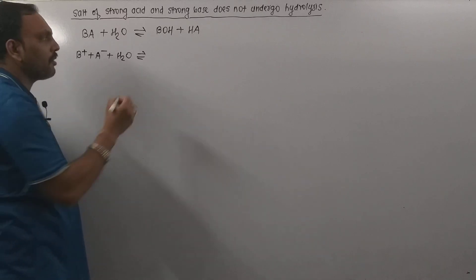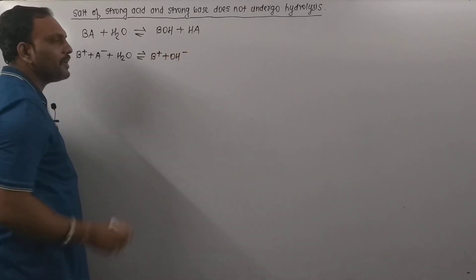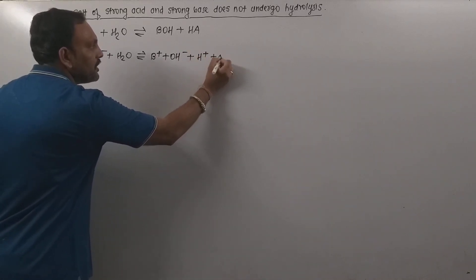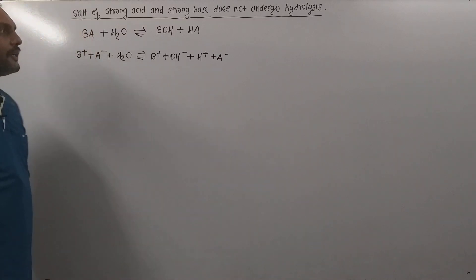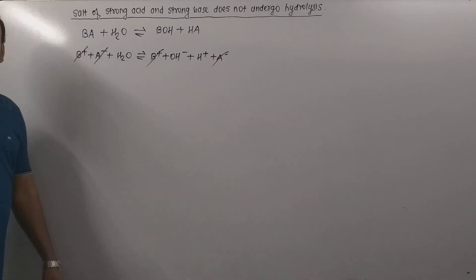BOH is a strong base, so this can be written in this manner: B+ plus OH-. And acid HA is a strong one, so this can also be written into ions. Now B+ and A- ions which are common to both sides ultimately get cancelled.